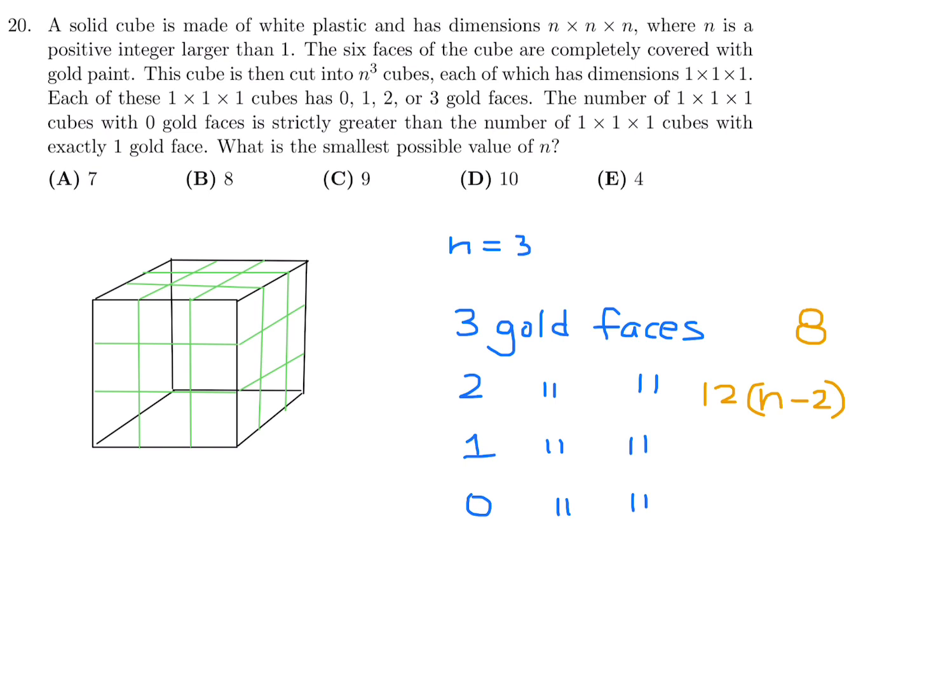1 gold face is basically in the middle. You get that by n minus 2 again. Multiply that by n minus 2. Because it's going to be this times that. And the dimension of this is n minus 2. And the dimension of this is n minus 2. And then there's six faces. So each of those will have that. So you multiply by 6. And then zero gold faces is the ones in the middle that you can't see. And that is basically a cube itself. n minus 2 times n minus 2 times n minus 2.